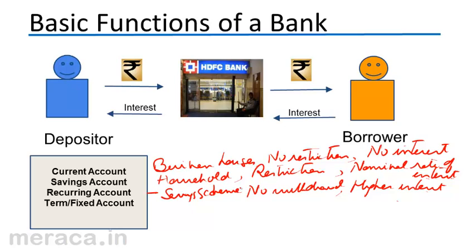A fixed deposit is a deposit wherein a lump sum of money is deposited for a fixed term — six months, one year, two years, five years, or ten years. Only on expiry of that term is withdrawal allowed. There is therefore no withdrawal, just like in the case of a recurring account. And this also carries a higher rate of interest.